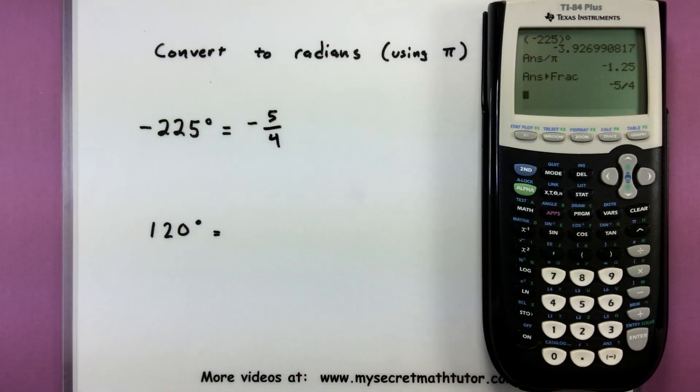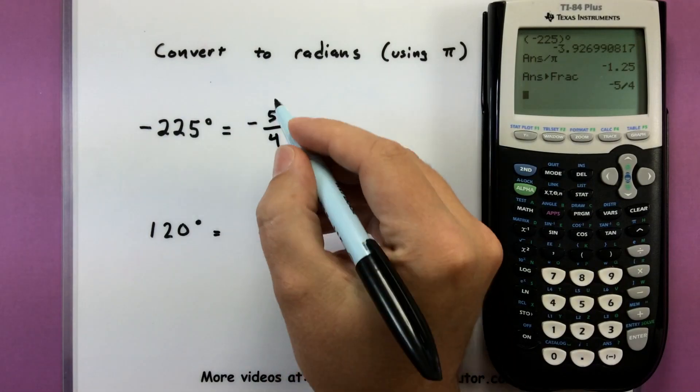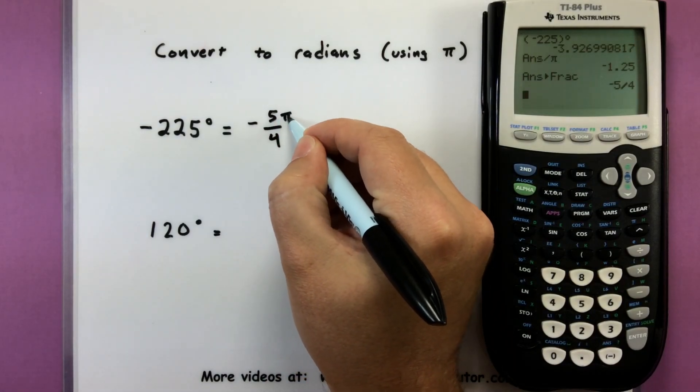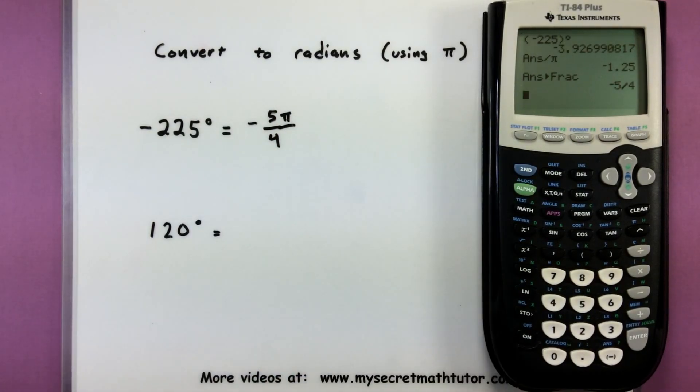Now here's where we have to kind of interpret what we get. So I've taken this number, I've divided by π, and I turned it into negative 5 fourths. That means the answer really does have a π in it. I just removed it out of there to make the numbers a little bit cleaner. So let's go ahead and put that π back into our answer. So this shows that negative 225 degrees is negative 5π over 4.